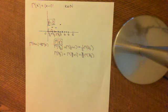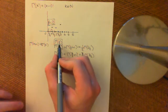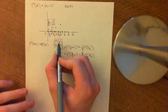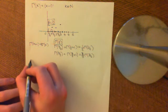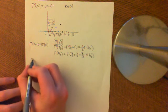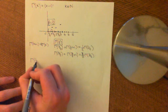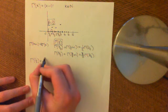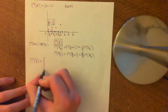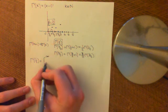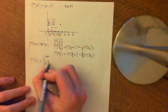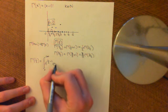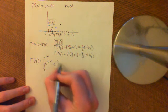Welcome to this next video in which we're going to work out what the gamma function evaluated at a half is. By definition, gamma of a half is equal to the integral from zero to infinity, t to the power of x — which in this case is a half — minus 1, e to the negative t, dt.